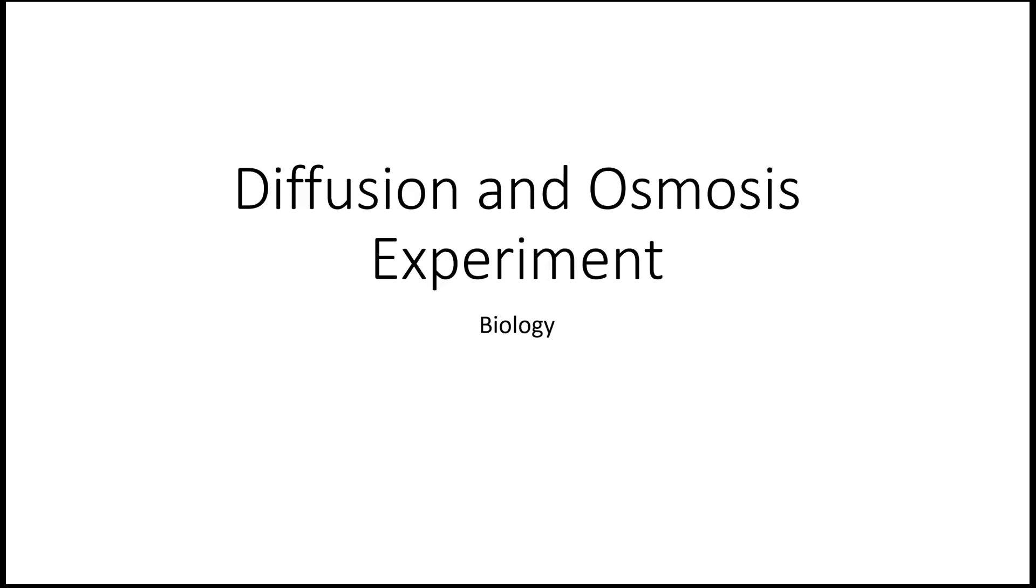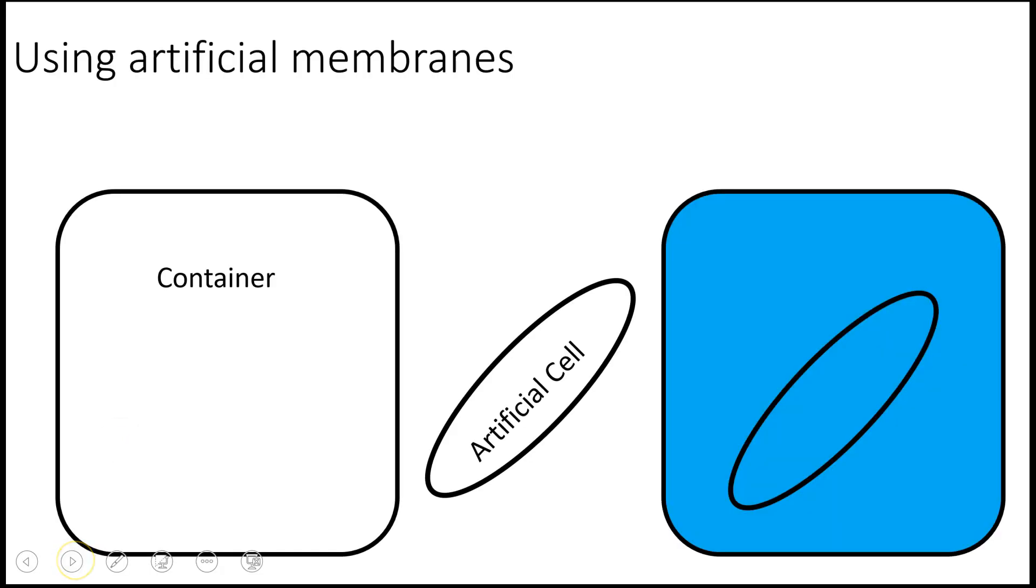This screencast reviews the diffusion and osmosis experiments performed in class using artificial cells. If you take a look at the setup, we have an artificial cell that is porous to some molecules such as water and very small molecules such as dye, but for larger macromolecules, for example starch, it would not be permeable.